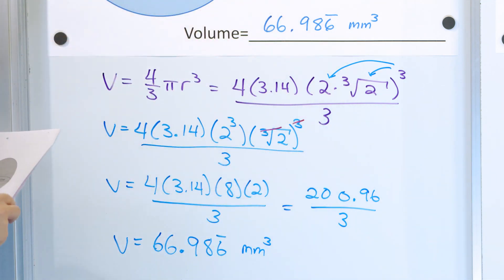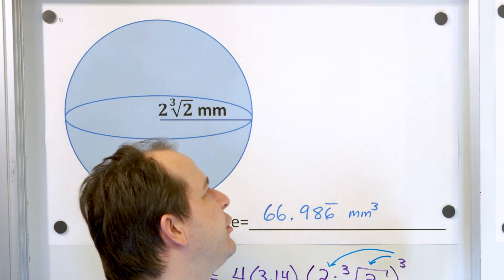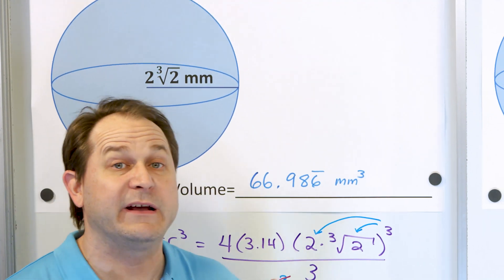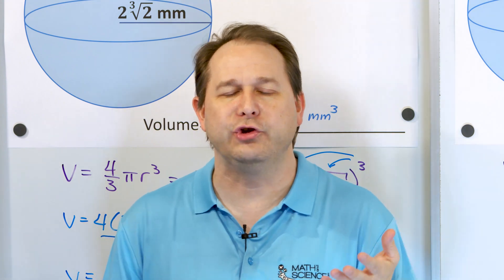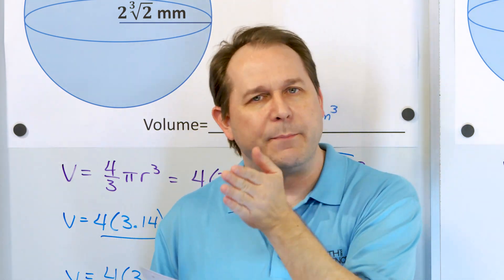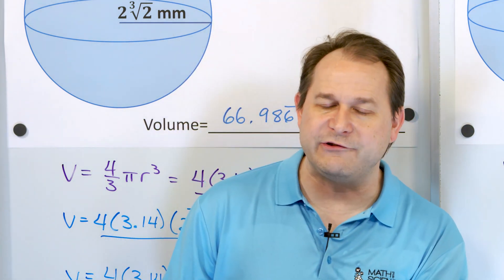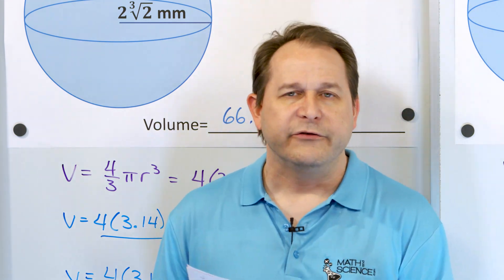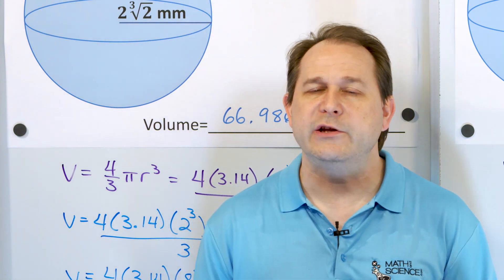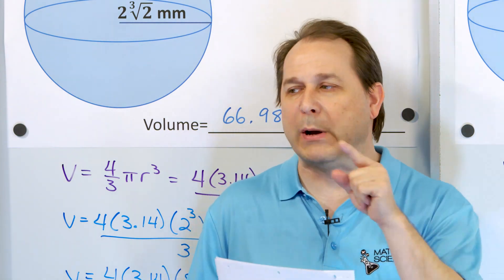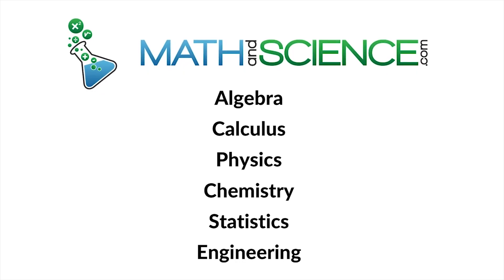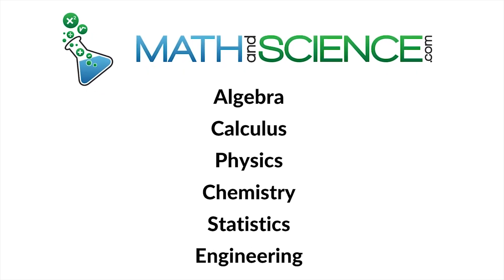So you see, every one of these problems was done in exactly the same way. 4 thirds pi r cubed. It's just when the radius has a weird cube root in it, then we can do some simplification because we know how to handle cube roots and how the opposite of a cube root is a cubing operation, just like the opposite of a square is a square root. So I'd like you to practice all of these. When you feel like you understand how to find the volume of a sphere, follow me on part 2. We'll wrap up the concept of the volume of a sphere.